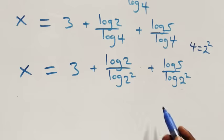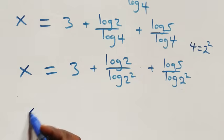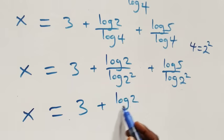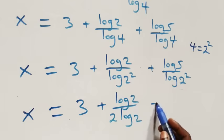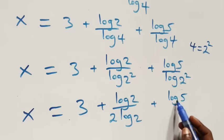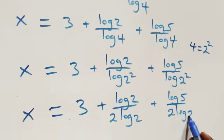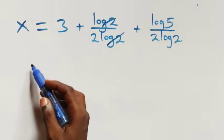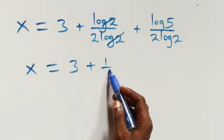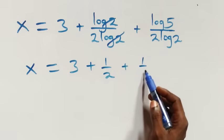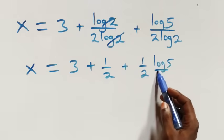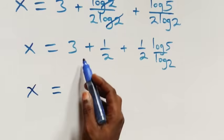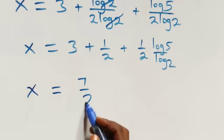From here, log 2 cancels each other and we have 1 over 2 left, which implies x equals 3 plus 1 over 2. And log 5 over log 4 can be written as one half log 5 over log 5 — applying change of base — which gives another half. So x equals 3 plus half, same thing as 7 over 2, then plus half.